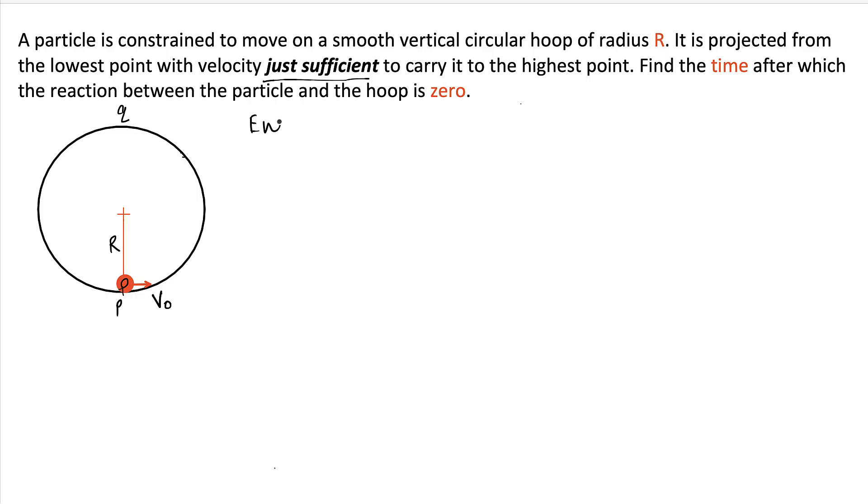So we can use energy conservation. Using this we can simply write half m V0 square equals mg times 2r. Therefore V0 square is 4gr. So this is the first equation, let's call it A.